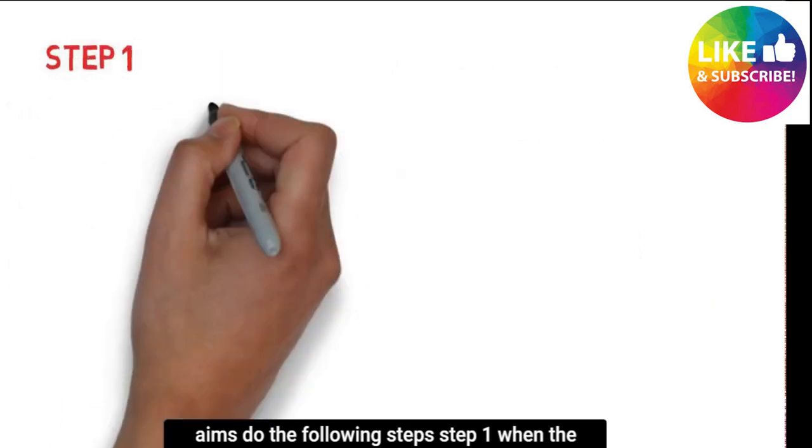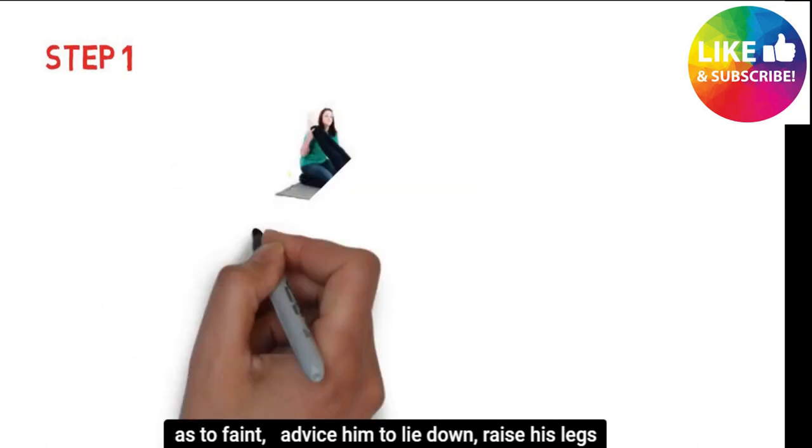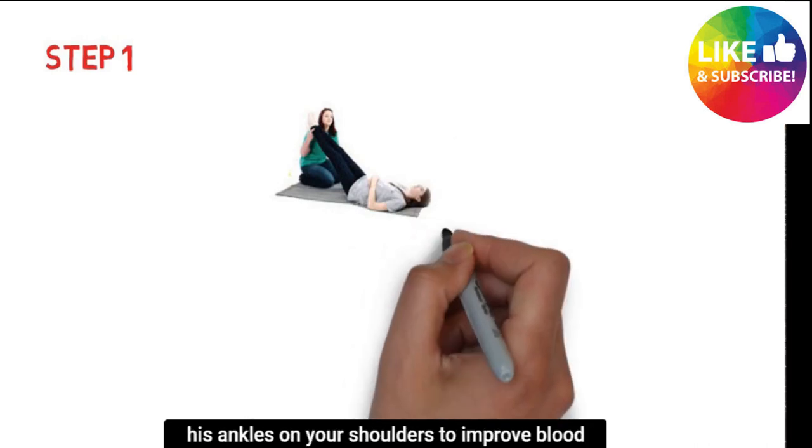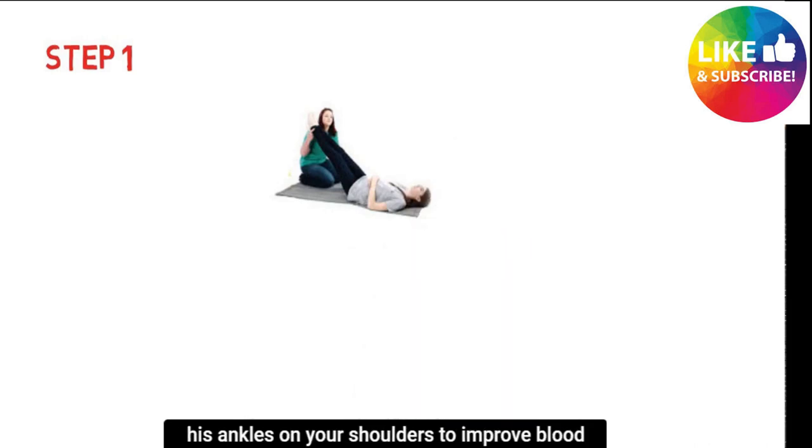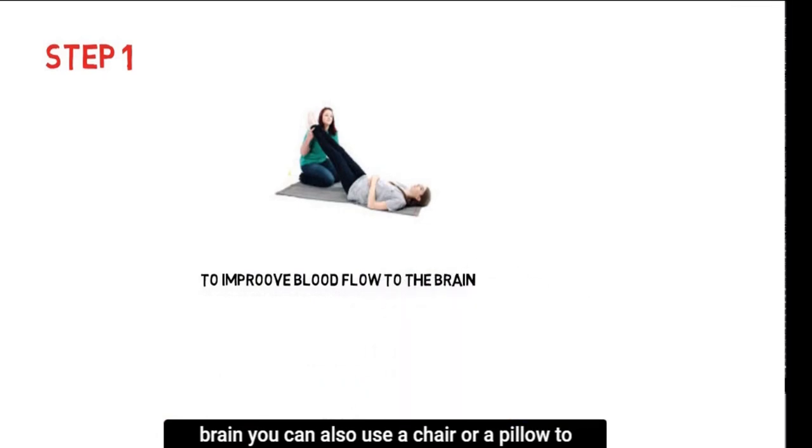Step 1: When the casualty feels as to faint, advise him to lie down. While kneeling down, raise his legs supporting his ankles on your shoulders to improve blood flow to the brain. You can also use a chair or a pillow to elevate the legs. Watch his face for signs of recovery.